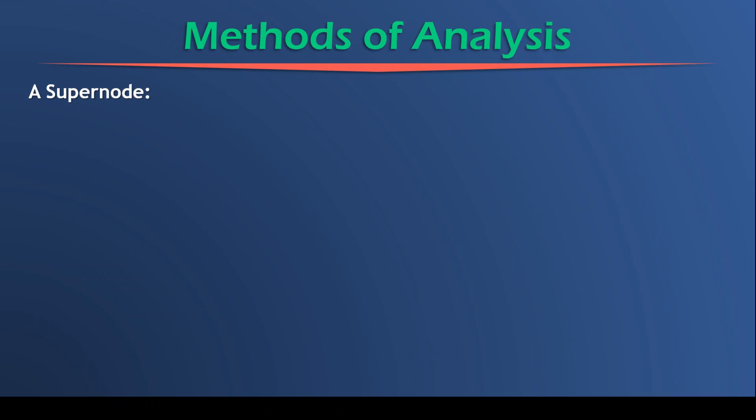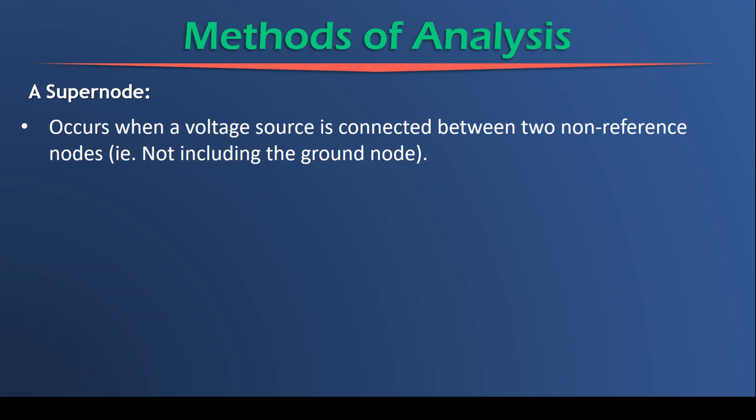Hello everyone and welcome to this theory recording on methods of analysis where we will be focusing on the supernode. So what is a supernode? A supernode occurs when a voltage source is connected between two non-reference nodes, in other words any node not including the ground node.